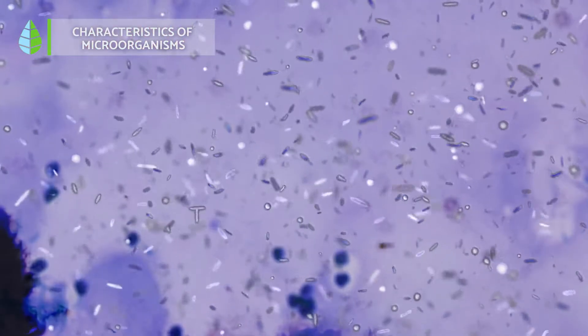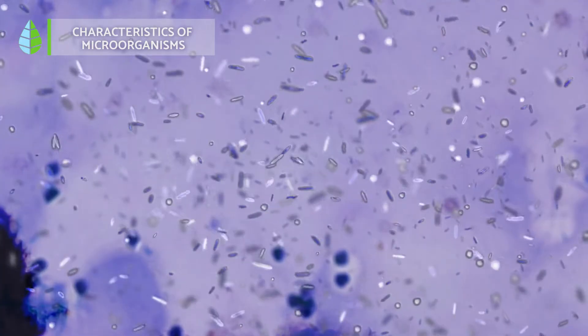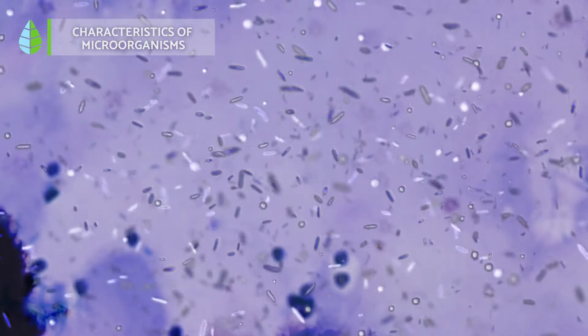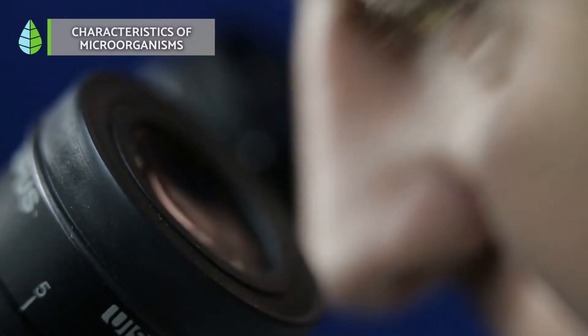The time required for their development and growth depends on the microorganism's type and how optimal the conditions are. Hence, we distinguish between slow-growing and fast-growing microorganisms. So, we can classify microorganisms into four large groups.